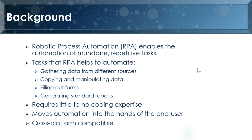Another common use is generating standard reports. The big advantage of RPA versus traditional automation — which includes a lot of coding and programming by your typical IT department — is that it requires very little or no coding expertise. It requires more of a good process understanding than coding, and because of that, it moves some of the automation into the hands of the end user, those who know the process the best.